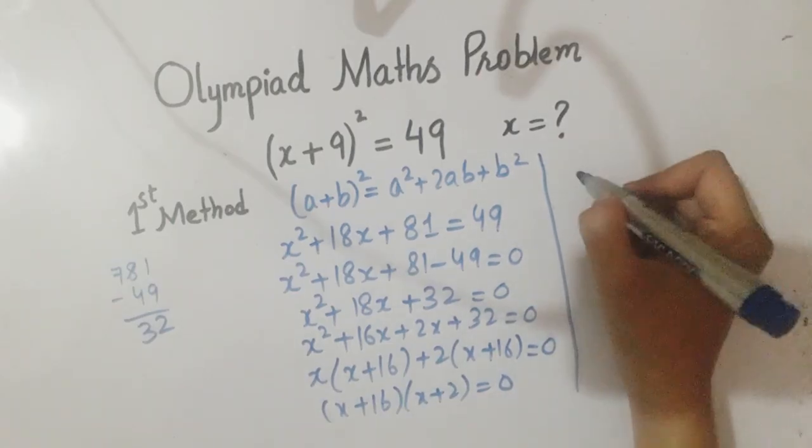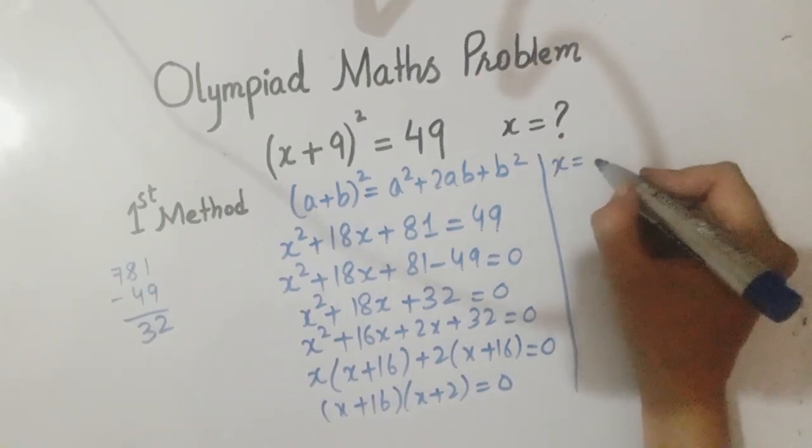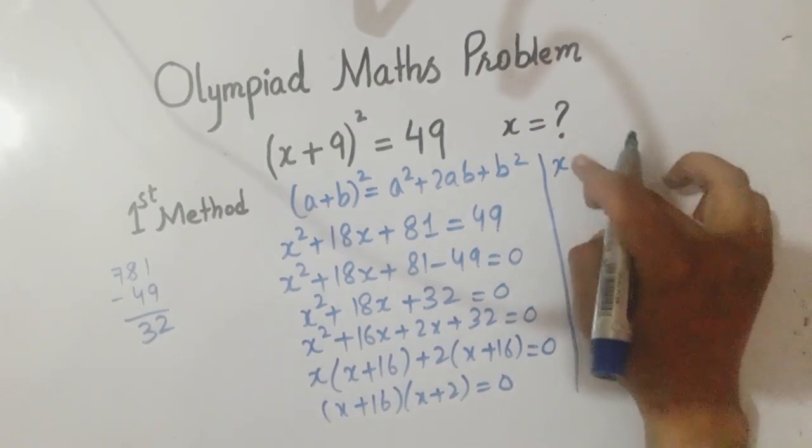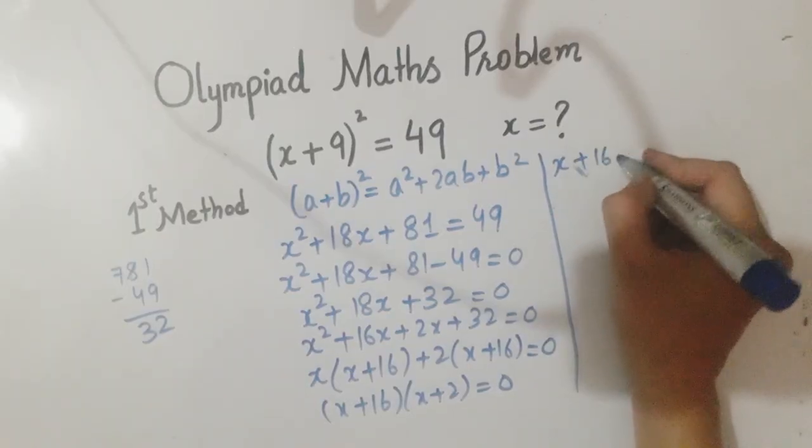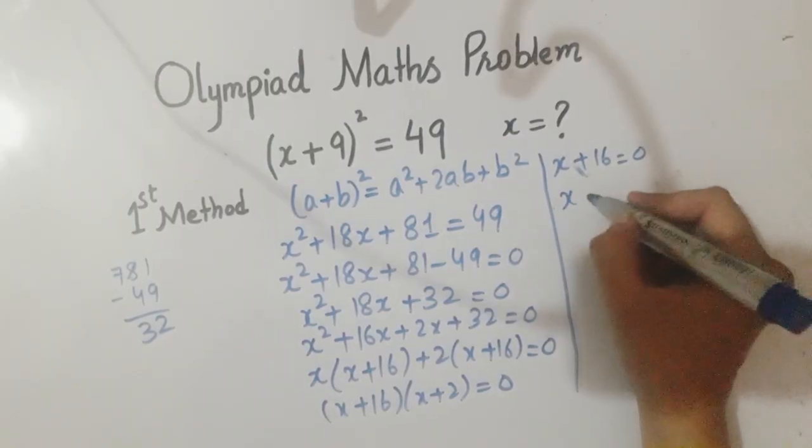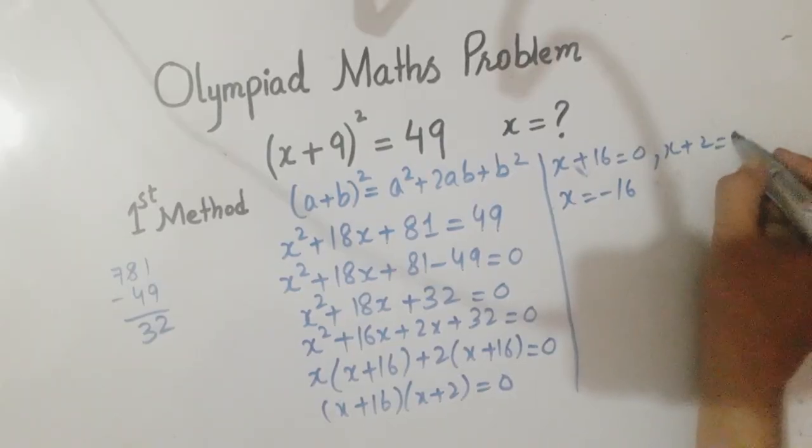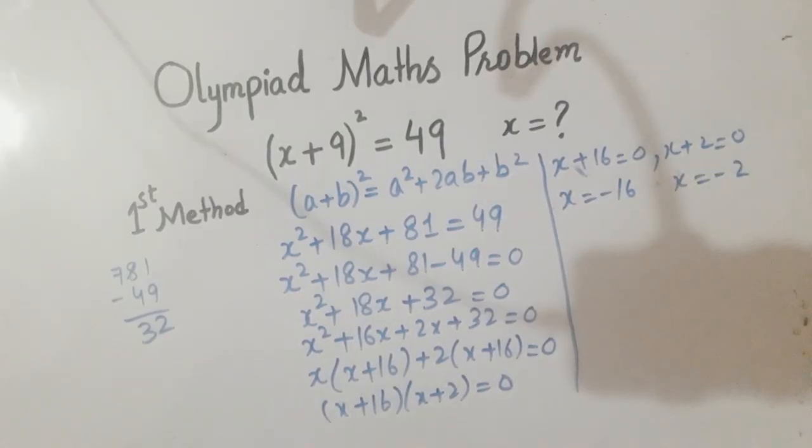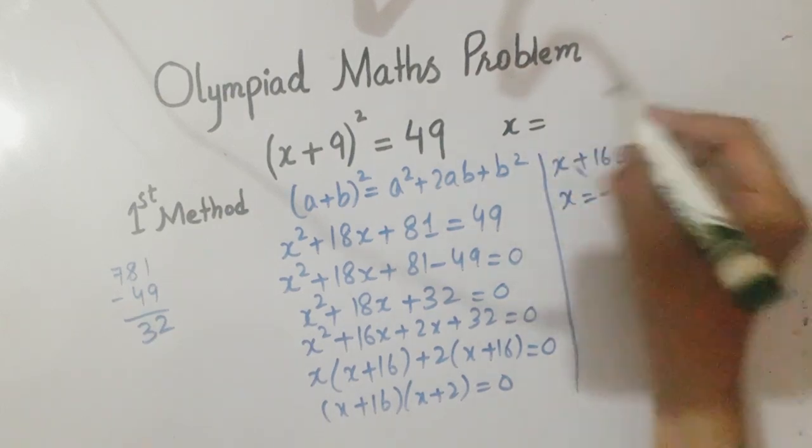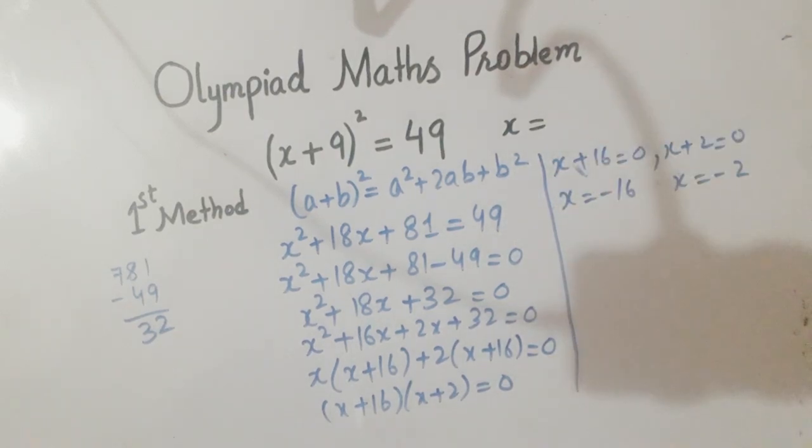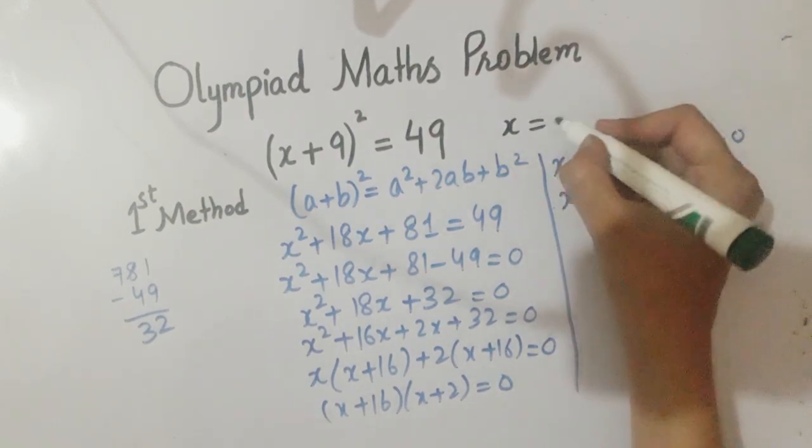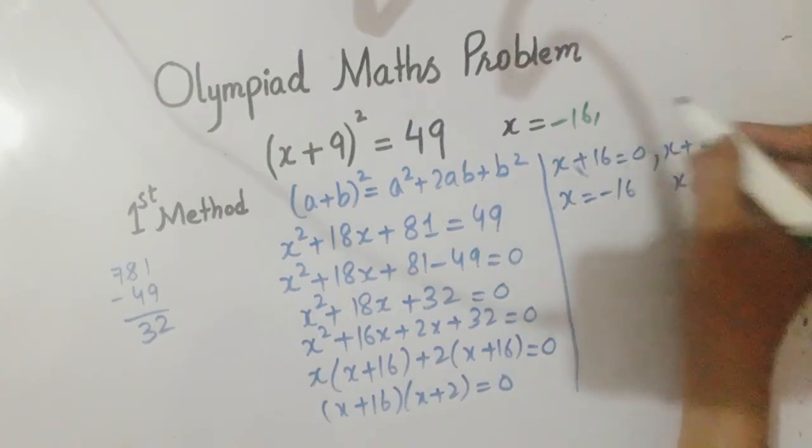So we get the values of x: x + 16 = 0 means x = -16, and the other one x + 2 = 0 means x = -2. So these are the answers: x = -16 and x = -2.